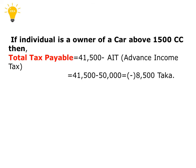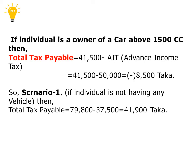But if the individual owns a car which is above 1500cc, then the total tax payable equals 41,500 minus AIT — advance income tax of the vehicle. In this case, 50,000 Taka is considered AIT for a car above 1500cc. That means the total tax payable comes to a negative figure, approximately minus 8,500 Taka. In case of a negative figure, a minimum tax of 5,000 Taka is fixed by the government, and that will be payable.